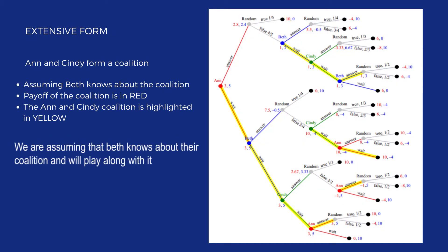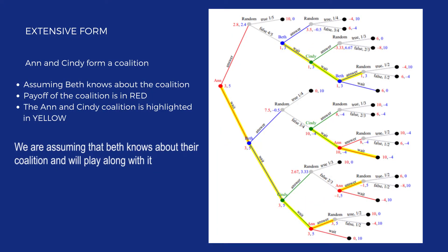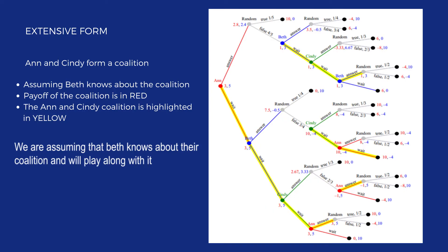This extensive form shows what will happen if Ann and Cindy form a coalition, assuming Beth knows about it and plays along. Look at the path highlighted in yellow — that is the Ann and Cindy coalition path. The red dots within that path show their payoff. The numbers in blue are Beth's expected payoff. She wouldn't mind if they form a coalition because she either gains $0 or $10, or loses $4, which is not a big deal to her.